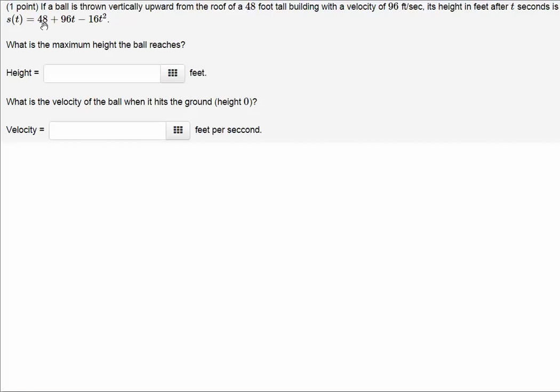So this s(t) is the position function. You can see the initial position is 48 feet - if you plug in t=0, this term and this term will be zero, so s(0)=48. Your initial velocity is 96 feet per second. We're asked two questions: find the max height and what's the velocity when the ball hits the ground.